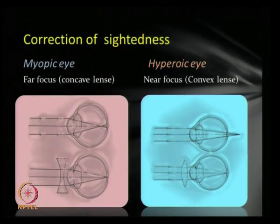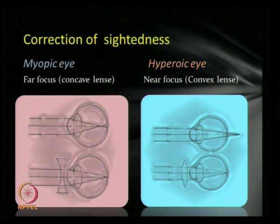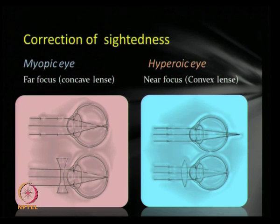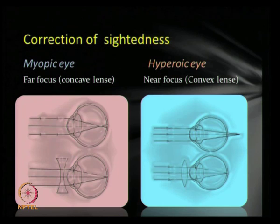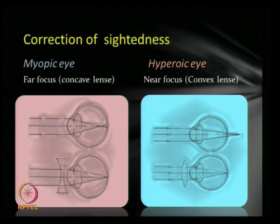We can correct these defects by using suitable lenses. For a myopic eye, we can use a concave lens. As you all know, a concave lens diverges the incoming light and makes the focus fall on the retina. For a hypermetropic eye, we can use a convex lens, which converges the light to fall on the retina.